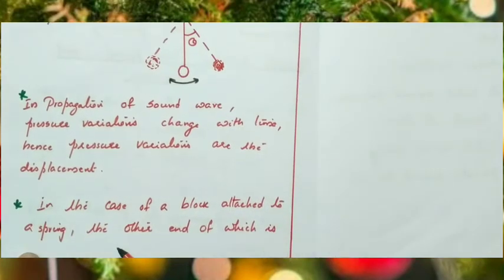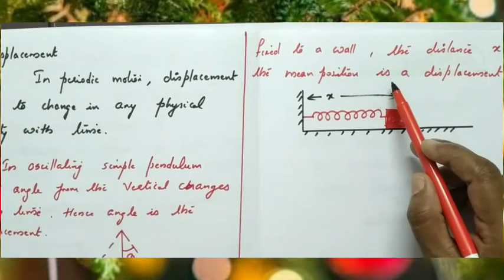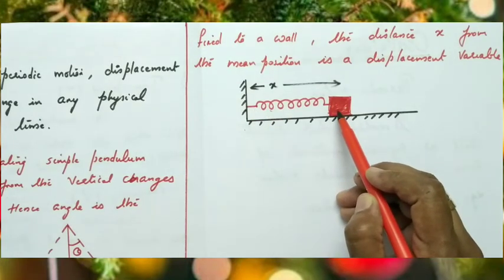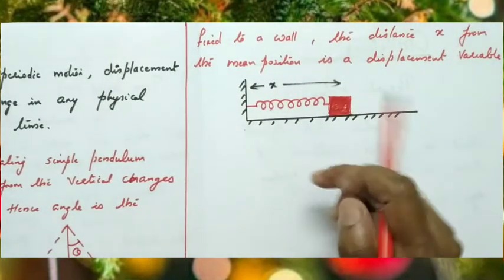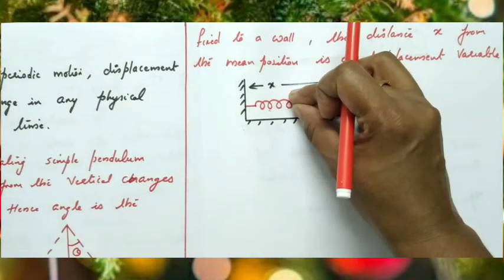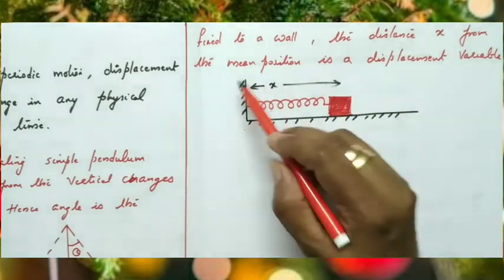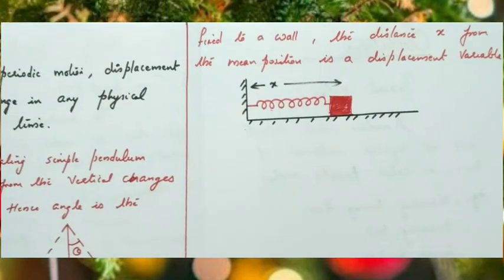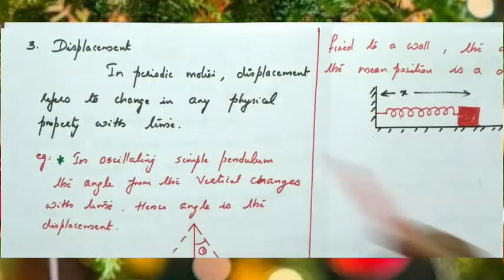Another example: in the case of a block attached to a spring, with the other end fixed to a wall, the distance x from the mean position is the displacement. If an external force is applied and then released, the block oscillates. The distance x changes with time — when the spring extends, x increases; when released, x decreases. So the distance x from the mean position varies with time and hence acts as the displacement vector. Therefore, any physical property that changes with time can be considered as displacement in periodic motion.